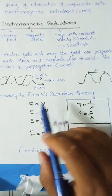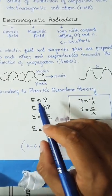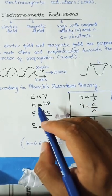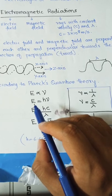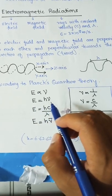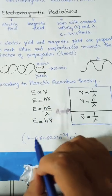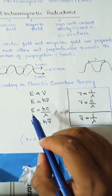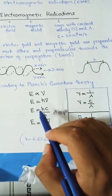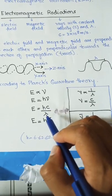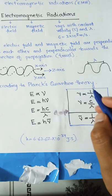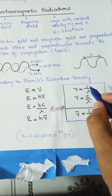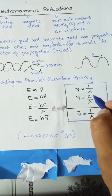According to Planck's quantum theory, the energy of these radiations is directly proportional to the frequency. Removing the proportionality constant, we get E = hν, where h is Planck's constant with a value of 6.626×10⁻³⁴ joule-second. We can also write this as E = hc/λ, because ν = c/λ, meaning energy is inversely related to wavelength λ.